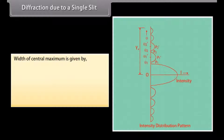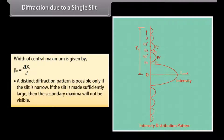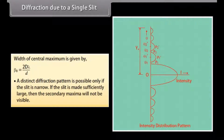The width of a secondary maximum is given by β = Dλ/d. The width of the central maximum is given by β₀ = 2Dλ/d. A distinct diffraction pattern is possible only if the slit is narrow. If the slit is made sufficiently large, the secondary maxima will not be visible.